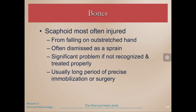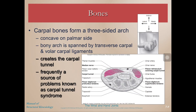The scaphoid is the most often injured of these bones. It happens from falling on an outstretched hand, where the radius jams up into the scaphoid. You might think it's just a wrist sprain, but really you've crunched that scaphoid bone, and it requires immobilization, maybe even surgery.